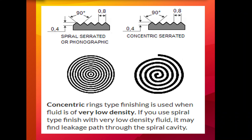Concentric ring type finishing is used when the fluid is of very low density. If a spiral type finish is used with very low density fluid, it may find a leakage path through the spiral cavity. This is a very important point — knowing where concentric ring types are used versus where spiral type finishes are used.